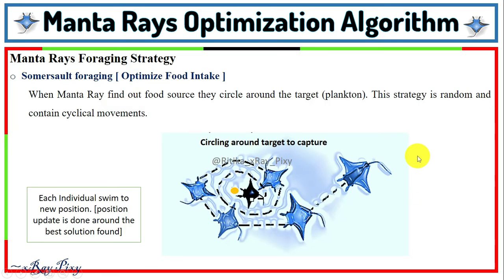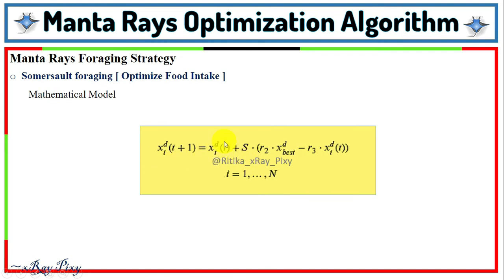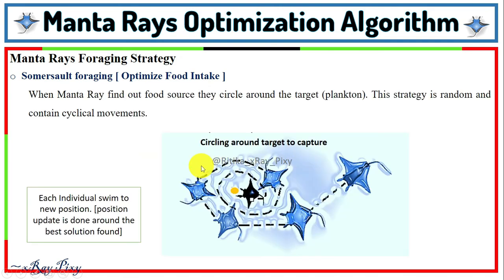The last strategy is somersault foraging, where the goal is to optimize food intake. When Manta rays find food sources, they circle around the target plankton. This strategy involves random, frequent local cyclical movements that help Manta rays optimize food intake. Each individual swims to a new position, updated around the best solution found — combining the individual position and the best solution found.